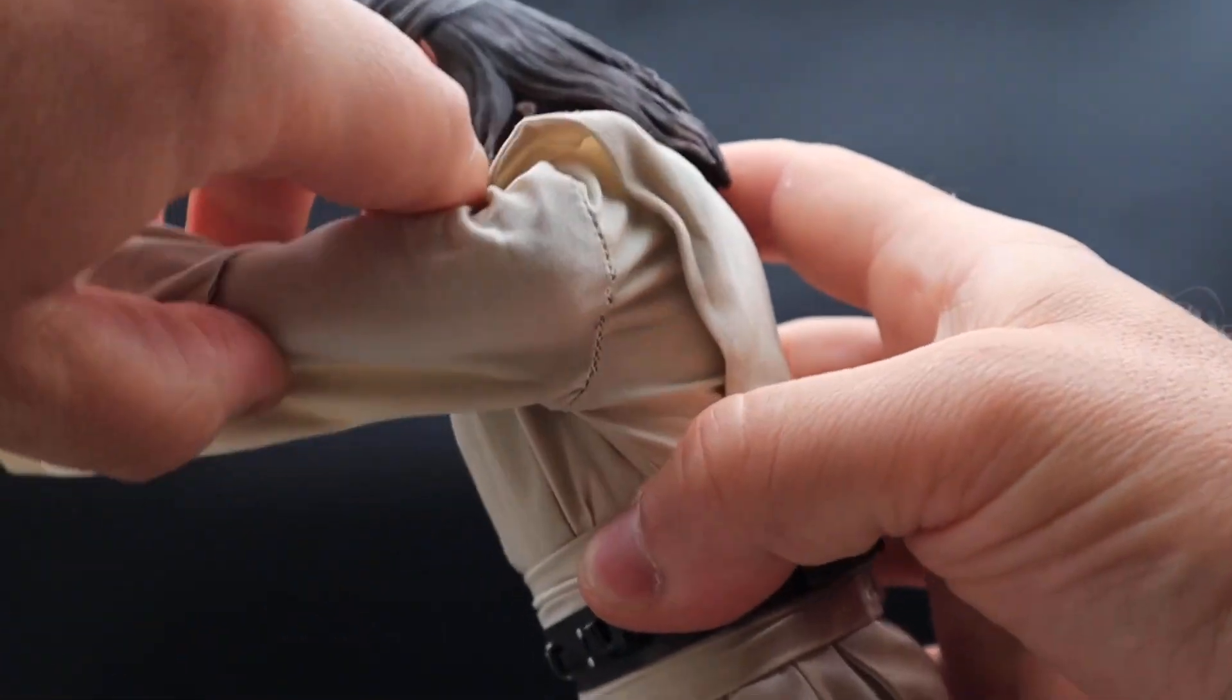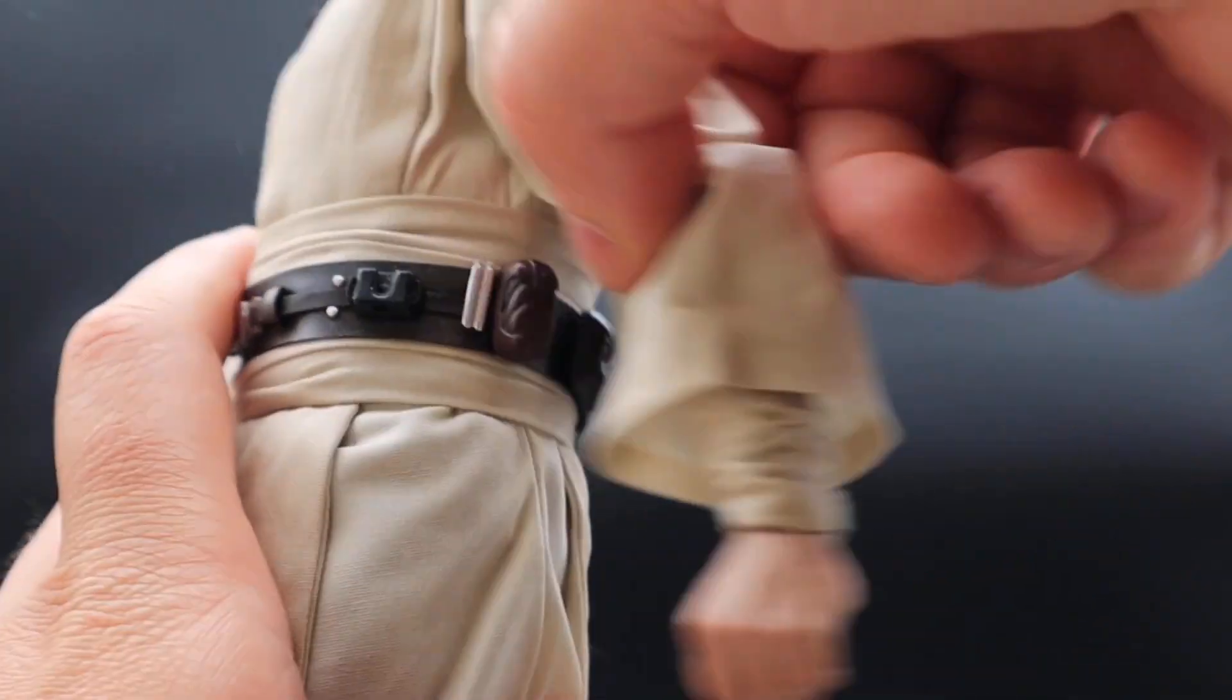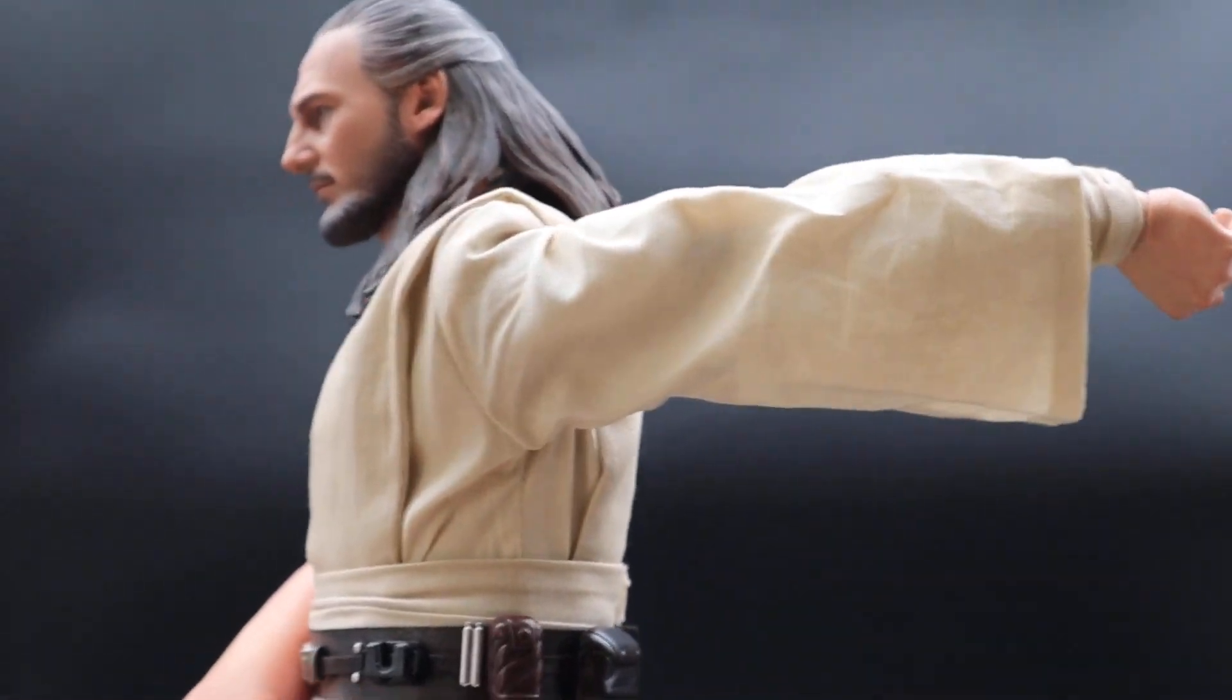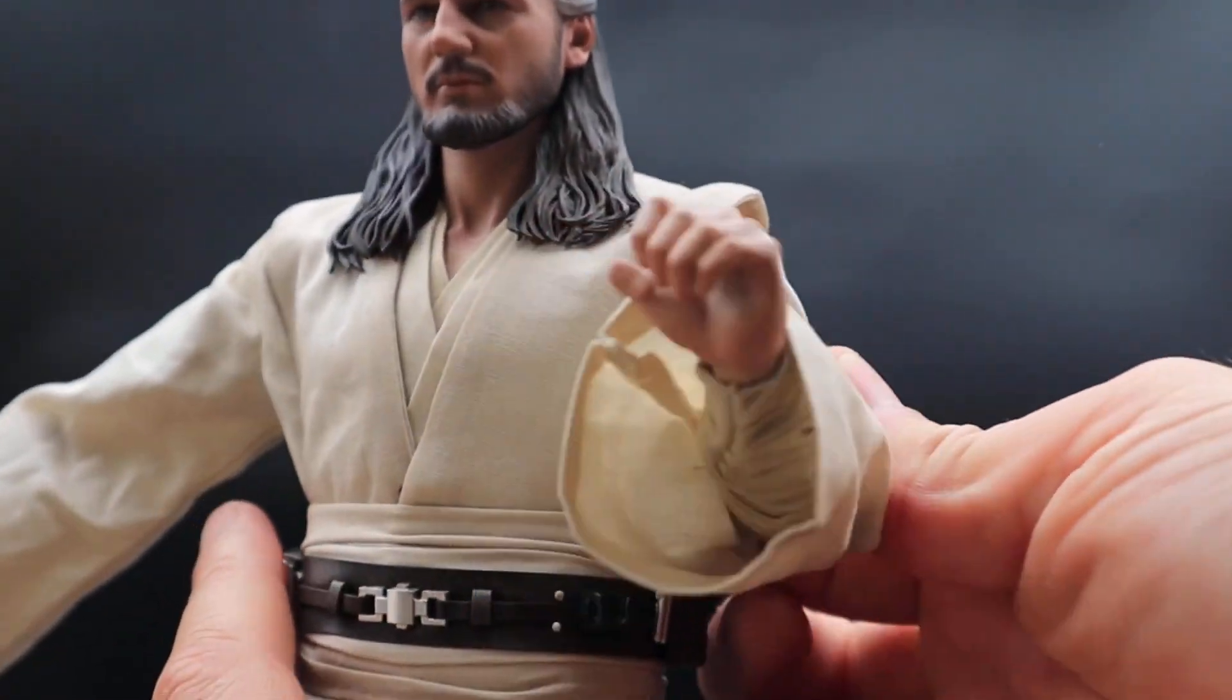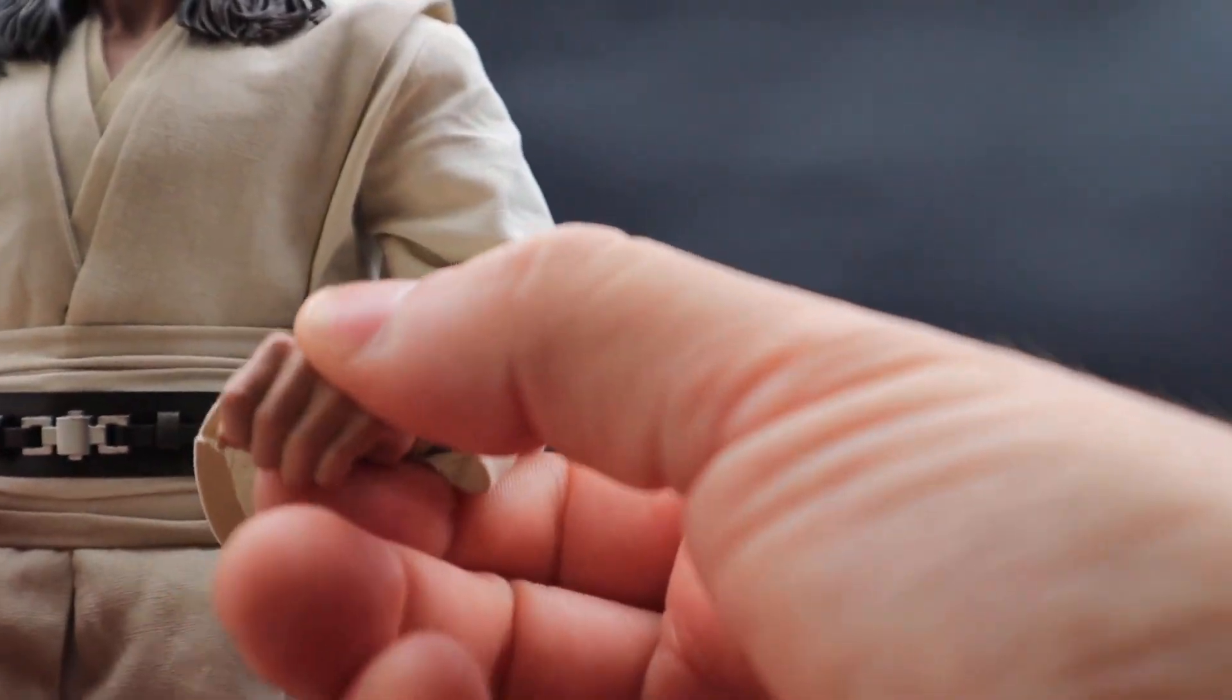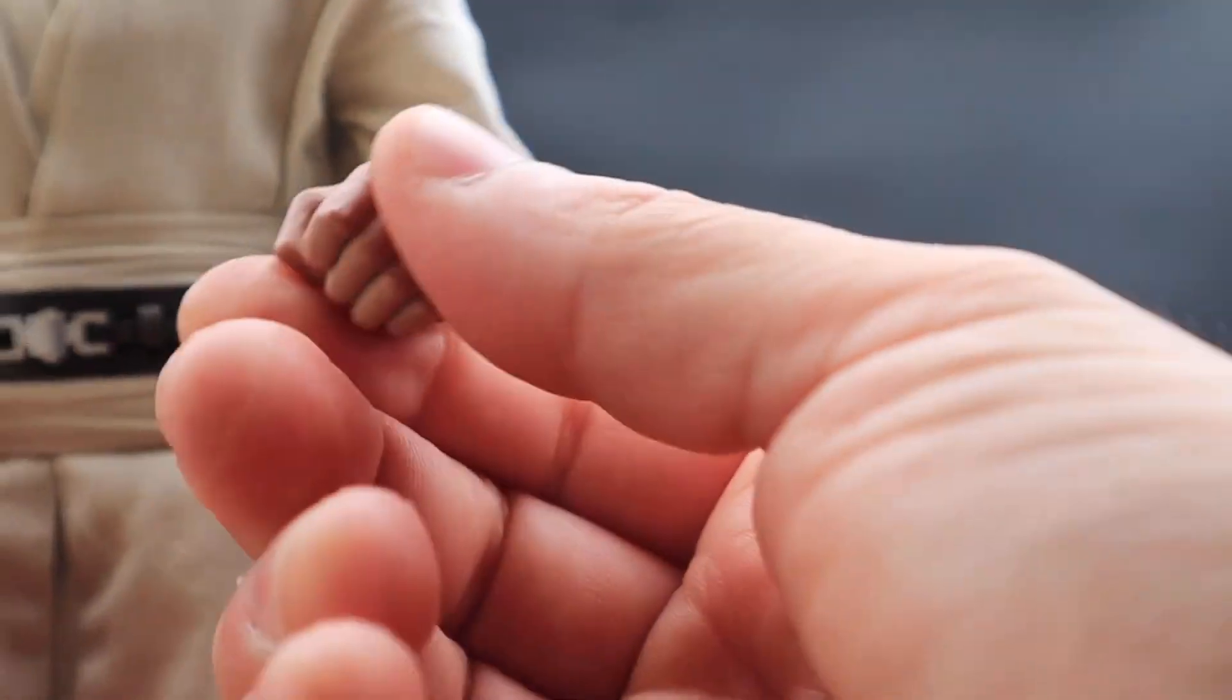His arms - you get a fair bit of movement there in the arms. Not too restricted, and going back a fair amount too. Can bend the elbow quite nicely. Get a bit of movement up on the bicep there. And standard Hot Toys wrist peg, so you do get a bit of movement in the wrists.